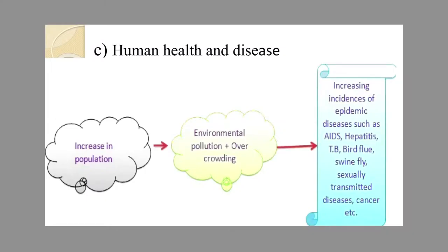The next ill effect of man-made ecosystems due to industrialization is the effect on human health. Increase in population is leading to environmental pollution and overcrowding. As a result, there is an increased incidence of epidemic diseases such as AIDS, hepatitis, bird flu, swine flu, cancer, etc. Remember, all these diseases are reported at higher magnitude from congested populations of our country, because not only are these areas congested, free air supply is also restricted and malnourished populations normally reside there.